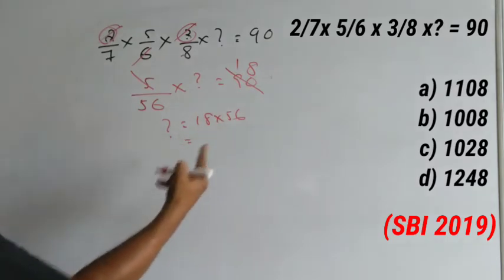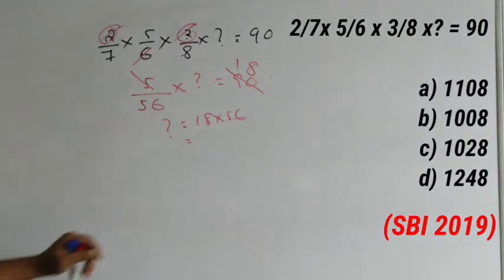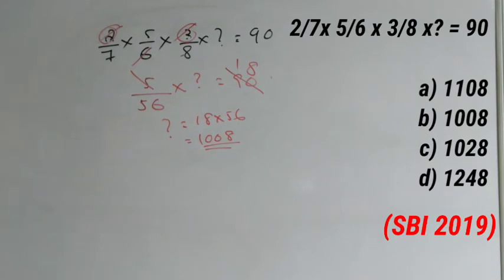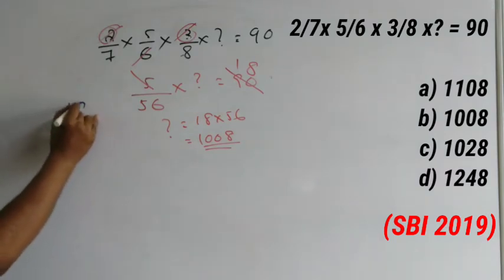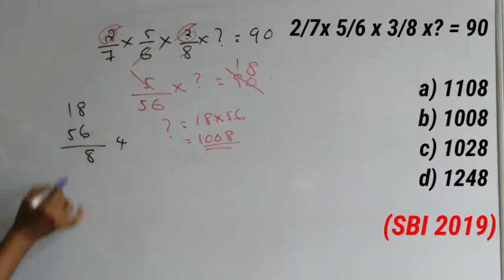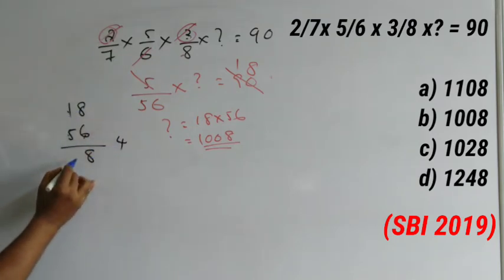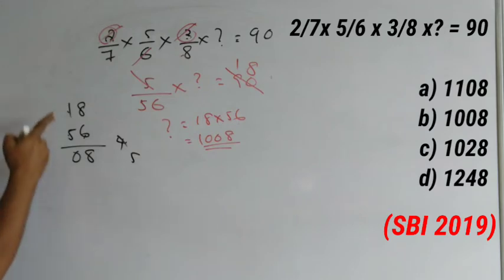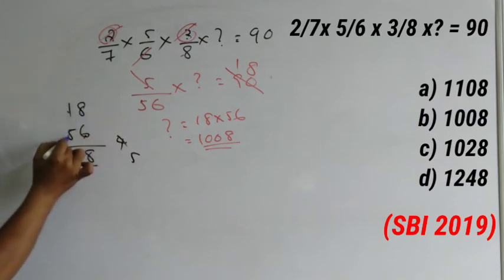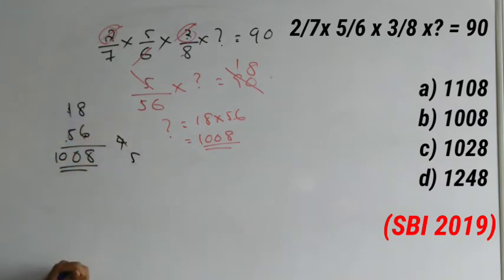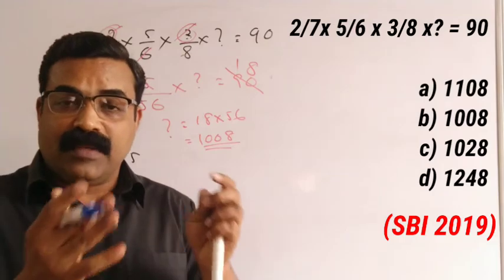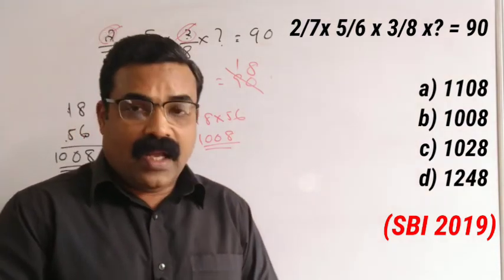What is 18 × 56? Using the crisscross method: 8 × 6 = 48, carry 4; then cross multiply 1×6 and 5×8 = 6 + 40 = 46 plus carry 4 = 50, carry 5; then 1 × 5 = 5 plus carry 5 = 10. So 18 × 56 = 1008. This way you can find the correct option. You are just simplifying the given question to its simplest form and then finding the answer.